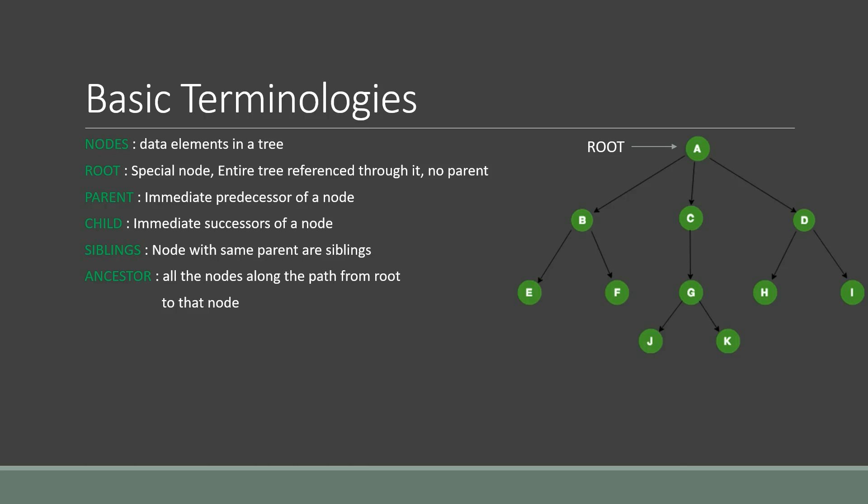The ancestor of a node refers to all nodes along the path from the root to that particular node. For example, the ancestors of node J are A, C, and G — all nodes along the path from root A to J. Descendants of a node are all nodes along the path from the current node to the leaf node. For example, the descendants of node C are G and J.